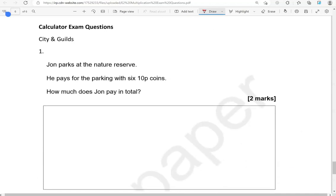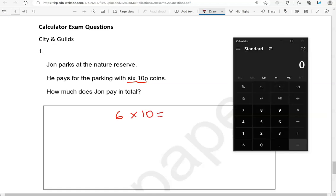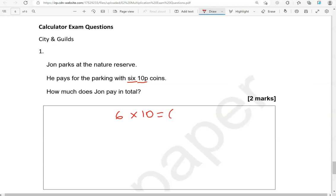From now on, we can use a calculator. John parks at the nature reserve. He pays for the parking with 6 10p coins. How much does John pay in total? So 6 times 10 gives us 60. 60 pence.